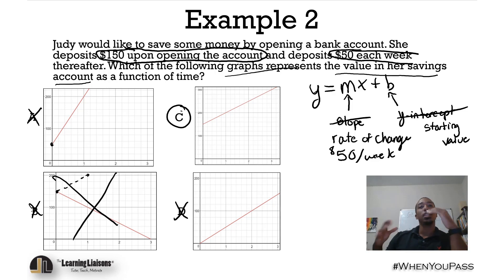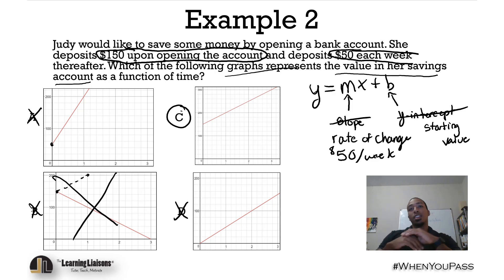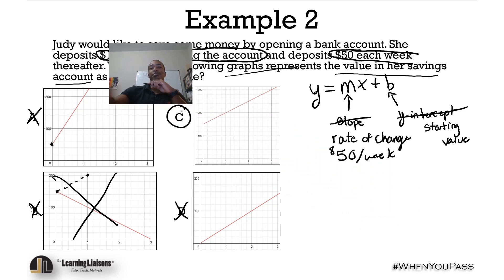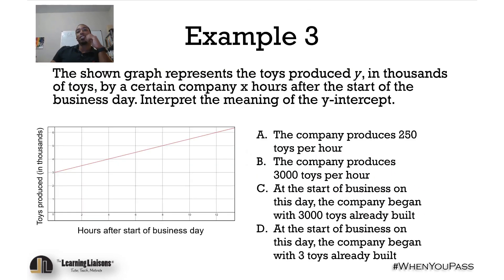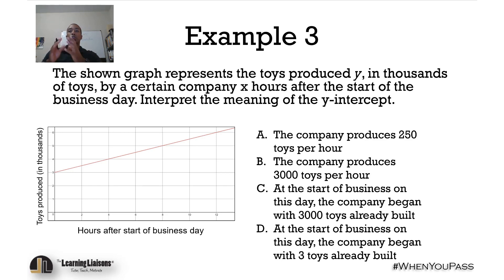The answer is C because we needed to see an ascending graph starting at the value of 150. Now for example three: the shown graph represents the toys produced Y — in thousands of toys — by a certain company, X hours after the start of the business day. Interpret the meaning of the Y intercept.